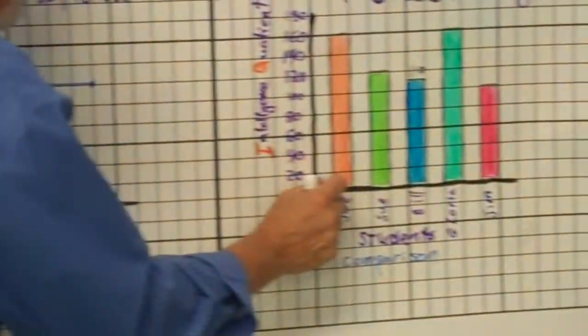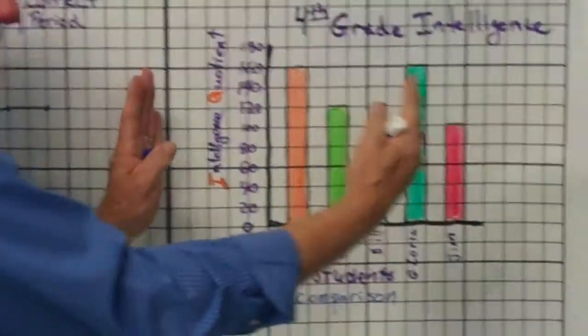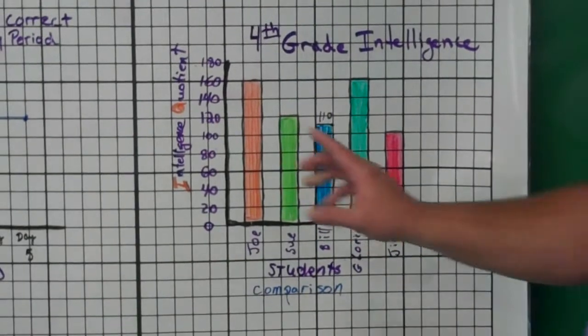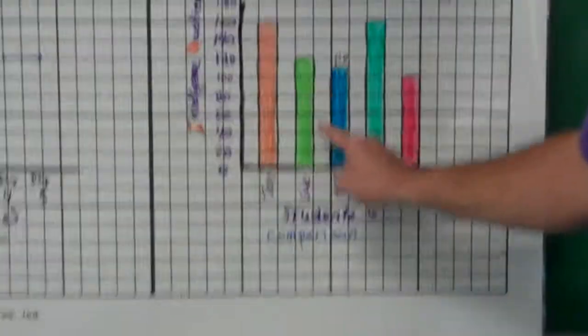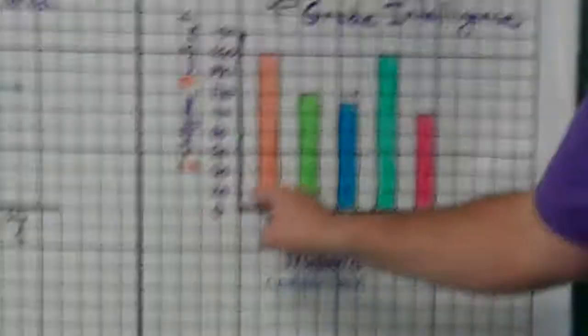When I do the bar graphs, I always make sure that there's a space in between the bars. Sometimes students will bunch all the bars together and that looks ugly. And one important thing, you see there's one space, one space, one space.